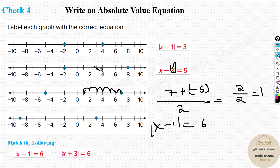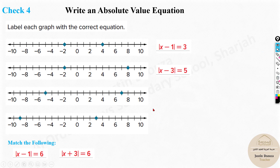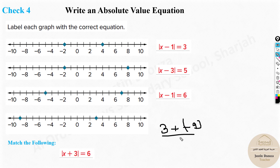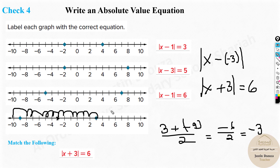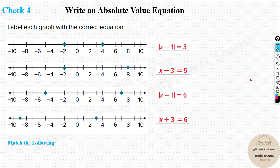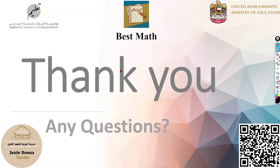For the third graph with points at negative 5 and 7: midpoint equals (7 plus (negative 5)) divided by 2 equals 1, distance from 1 to 7 is 6. Equation: absolute value of X minus 1 equals 6. For the fourth graph with points at negative 9 and 3: midpoint equals (3 plus (negative 9)) divided by 2 equals negative 3, distance from negative 3 to 3 is 6. Since it's X minus (negative 3), that becomes X plus 3 equals 6. These are the four answers for matching the graphs.